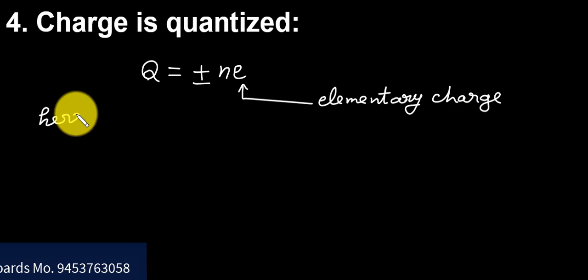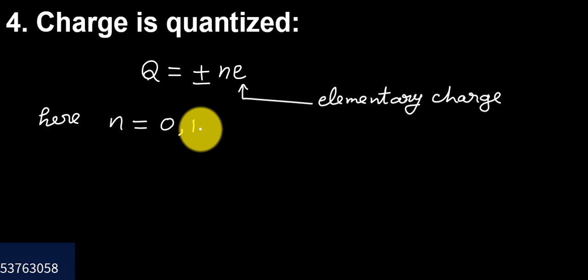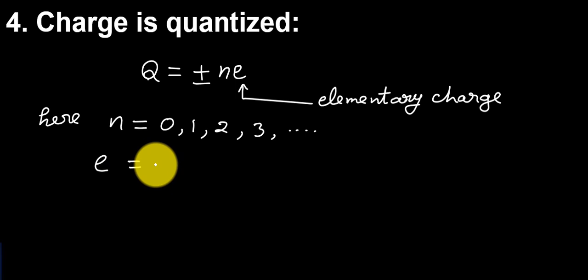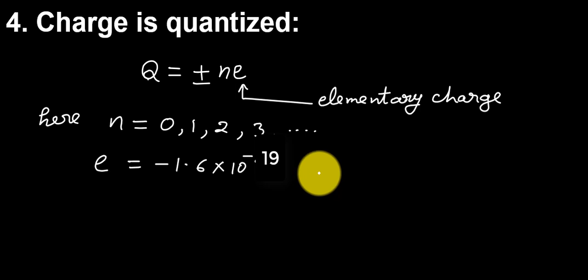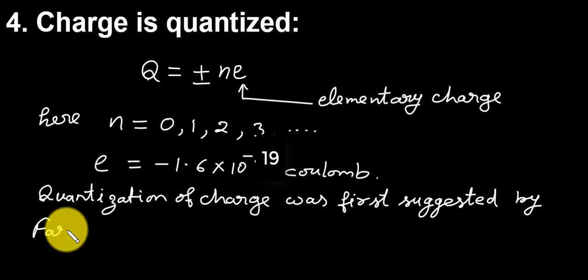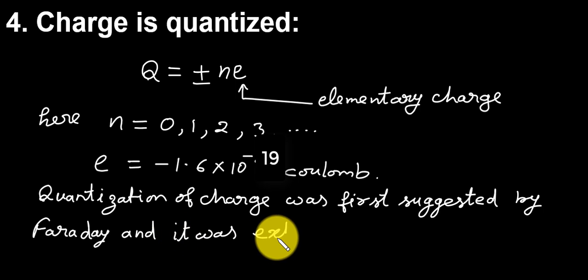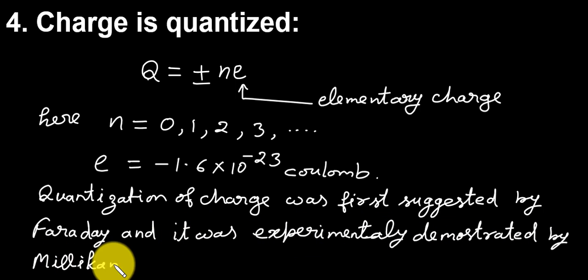The value of N may be 0, 1, 2 and so on. The magnitude of charge on one electron is 1.6 × 10^-19 Coulomb. Its nature is negative. The quantization of charge was first suggested by Faraday and it was experimentally demonstrated by Milken in 1912.